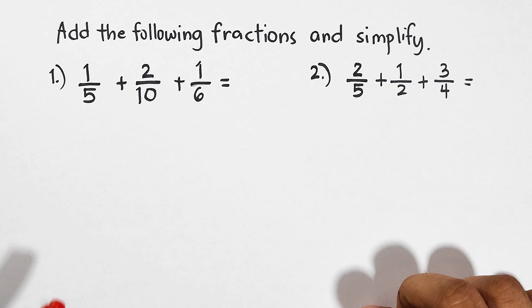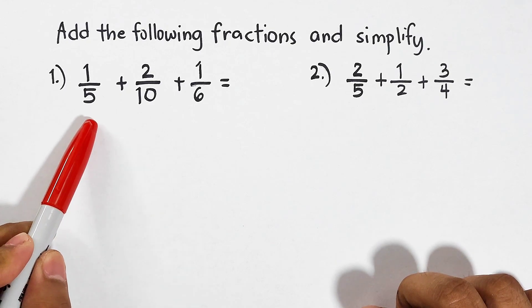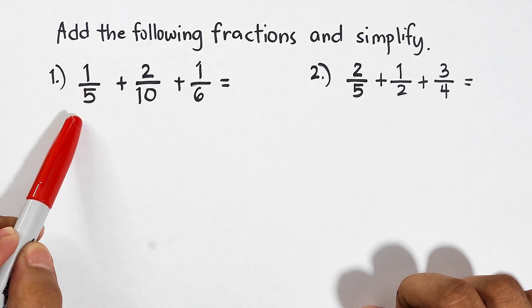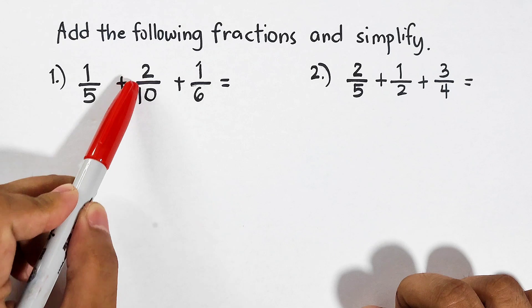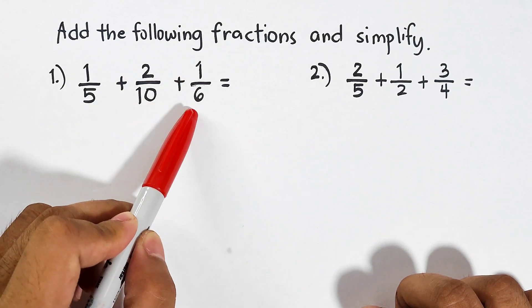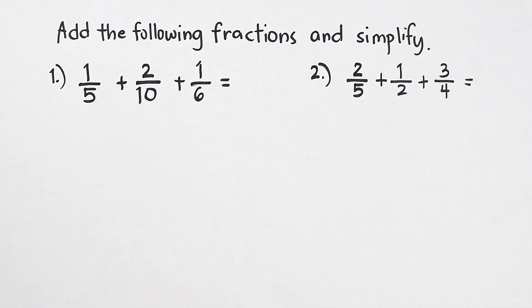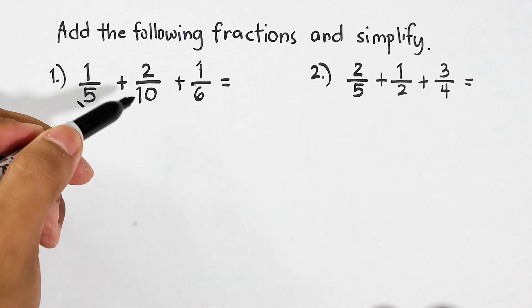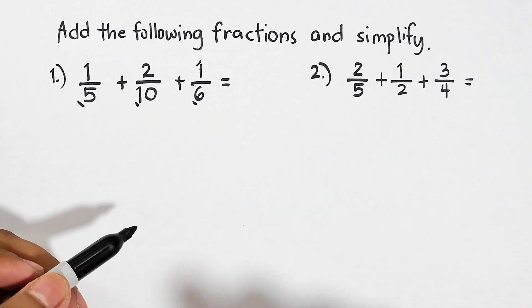In the first example we have 1 over 5 plus 2 over 10 plus 1 over 6. What we need to do now is to find the LCD of 5, 10, and 6.